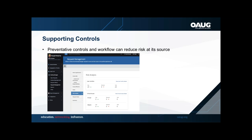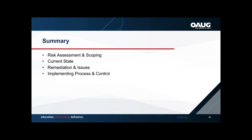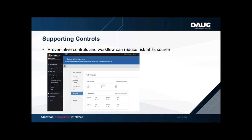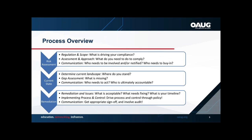Preventative controls — such as workflow and approvals — can reduce risk. You define within your organization how preventative you want to be: through workflow, limiting access, or combining limited access with a detective control such as a monthly detailed review of every new user created in the system.